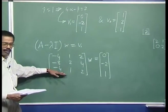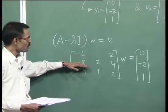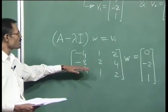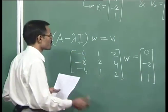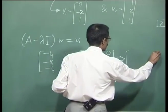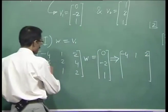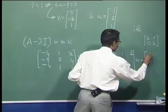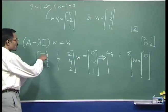We are looking for the generalized eigenvector corresponding to eigenvector v1. The same elementary row operations will mean that these two rows become completely zero. Applying those operations: R2 minus twice R1 into R2, and R3 minus R1 into R3. The first row remains unchanged, from the second row twice the first row is subtracted.